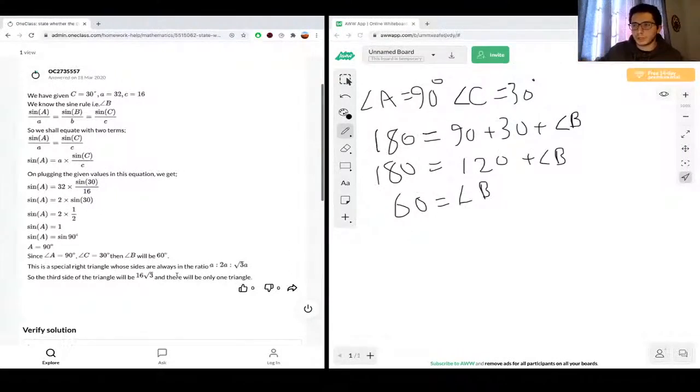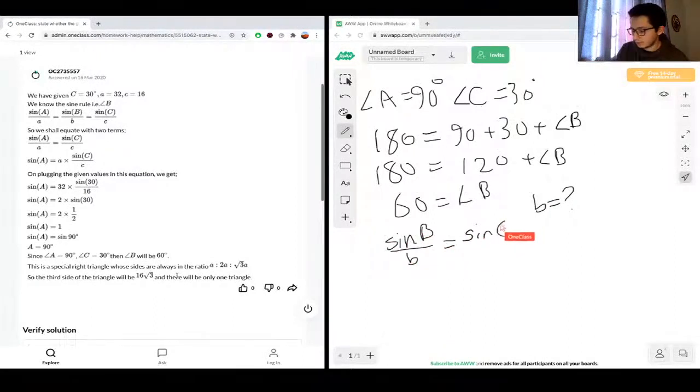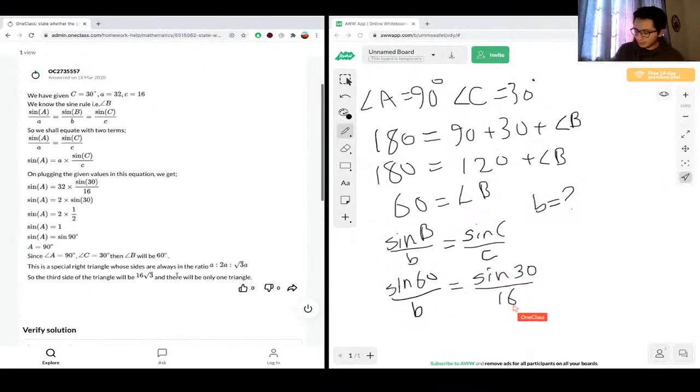So knowing this, we can also find the equation for the final length, which is B. So we still have B is the unknown, because we've solved for A, and we already have A and C. So there's a couple of ways to do this. You could just go right away and just use the sine formula from the beginning. So sine B over B is equal to sine C over C. So sine B is sine 60 over B, which is unknown, is equal to sine C, which is sine 30 over 16.